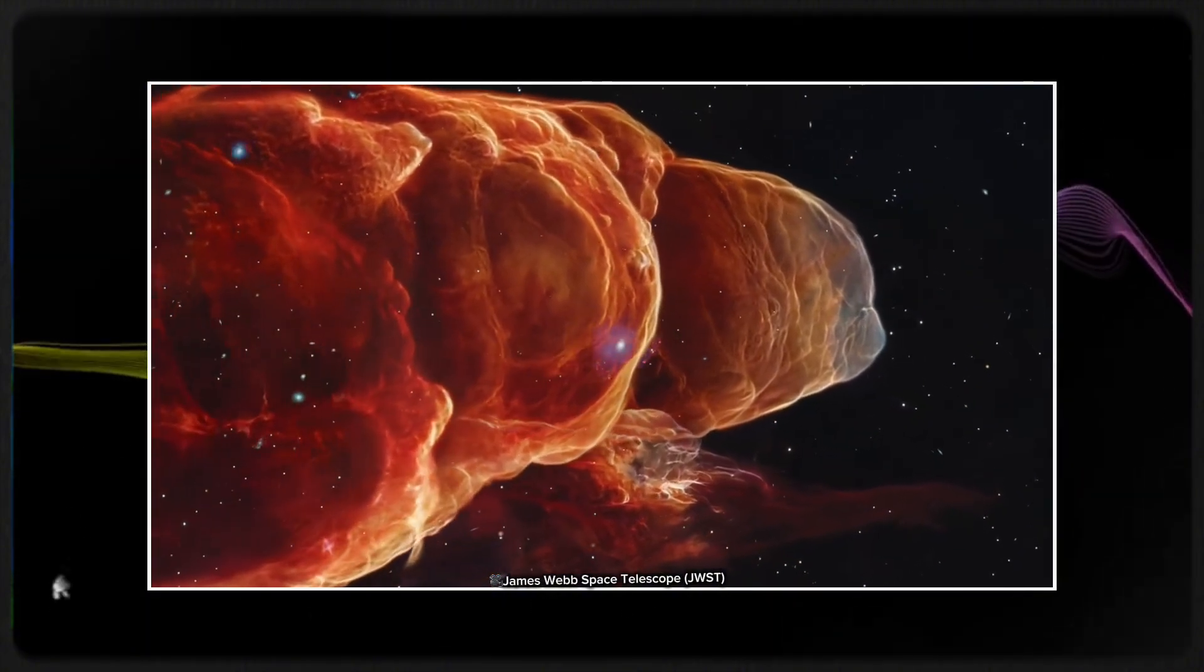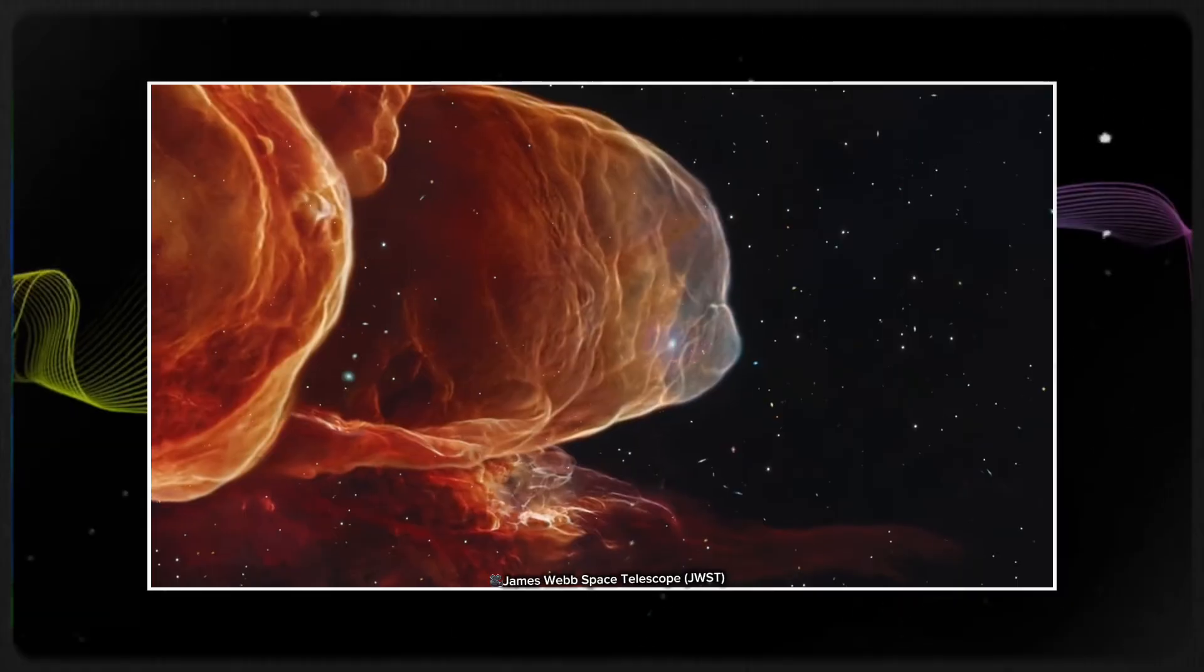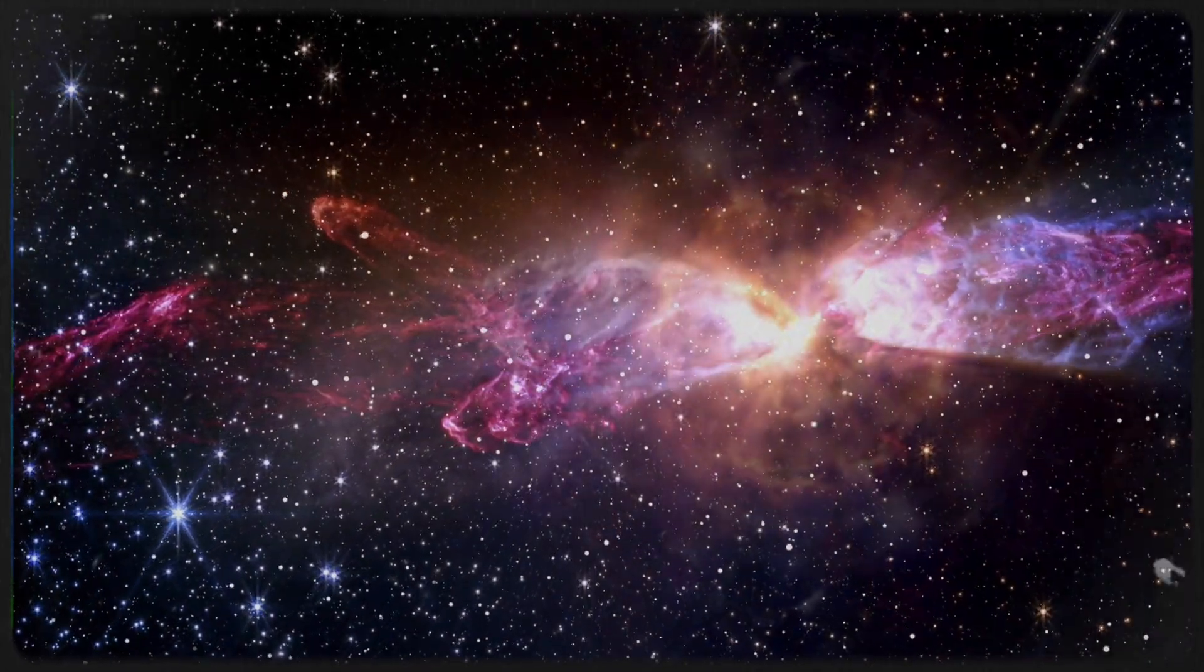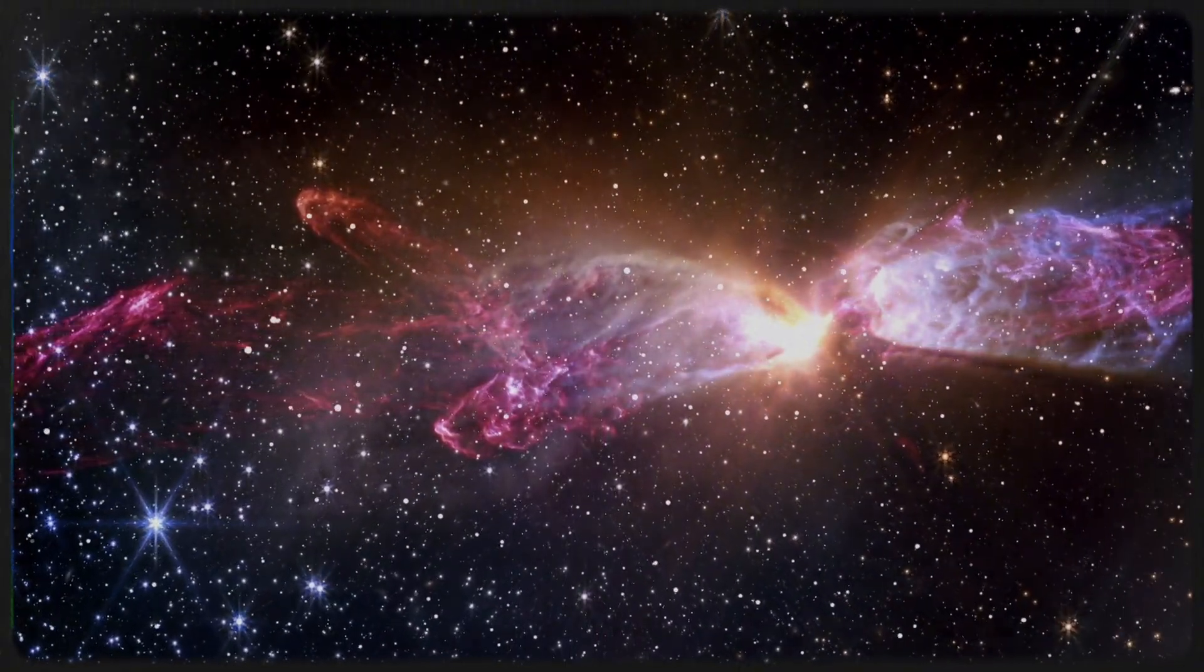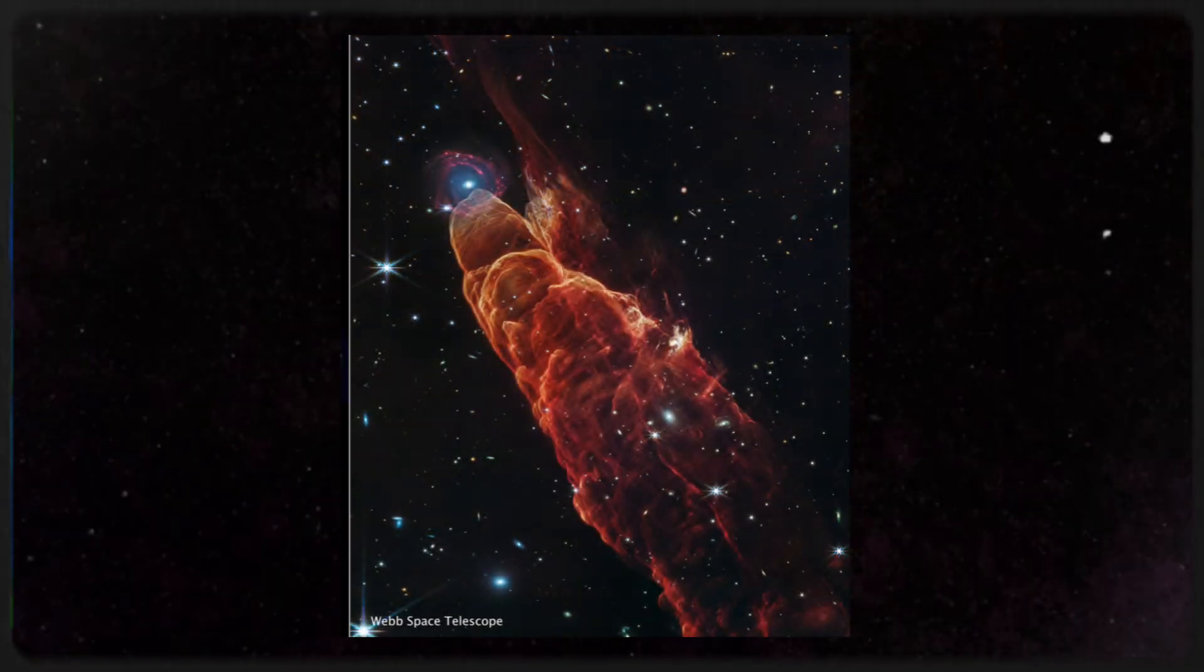Herbig Haro objects, like HH49x50, are formed when jets of gas are ejected from a newly forming star. These powerful jets slam into surrounding clouds of gas and dust, heating the material and generating shock waves that stretch across light years.